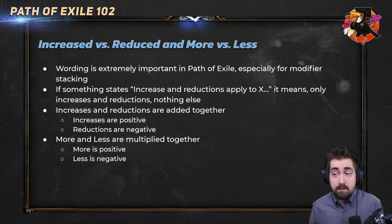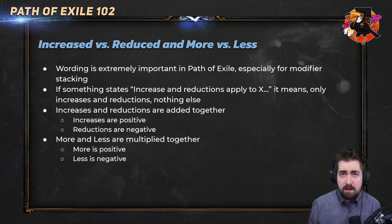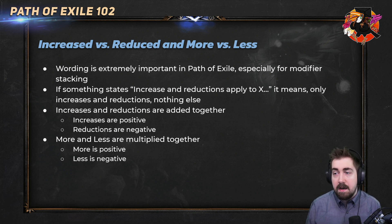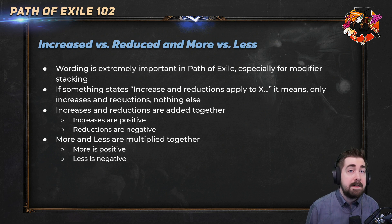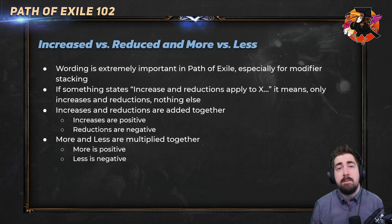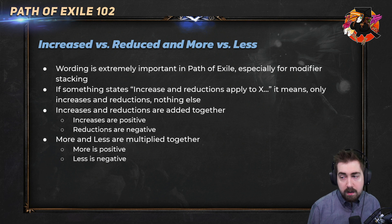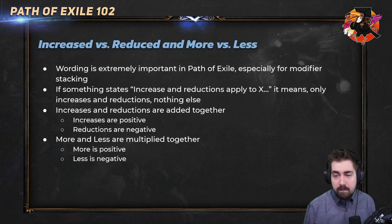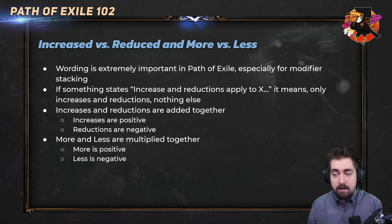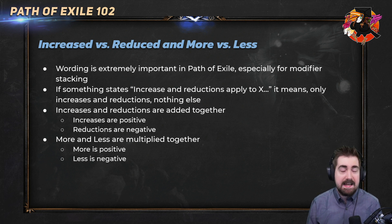We also have Increased, Reduced, More, and Less — these are very important in Path of Exile. A good example: Melee Physical support gives 45% more, but Fortify used to give 40% increased. A lot of people would wonder why you'd ever use Melee Physical, and that's because of the big difference between more versus increased. A good way to look at this is that increased is additive and more is multiplicative. People often call it Path of Multipliers because all you really want is to get as many multipliers as you possibly can.